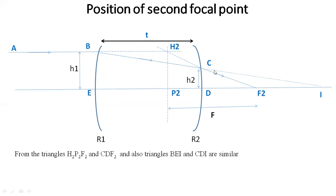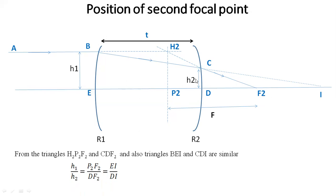The one pair is H2, P2, F2 and C, D, F2, and the second pair of similar triangles gives us the ratio. From the similar triangles H2P2F2 and CDF2, the distance H2P2 equals PE. The ratio H1/H2 equals P2F2 divided by DF2. From the second pair of triangles, EI/H2 equals EI/DI.